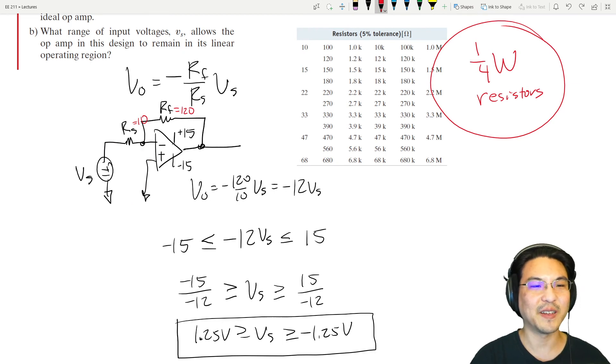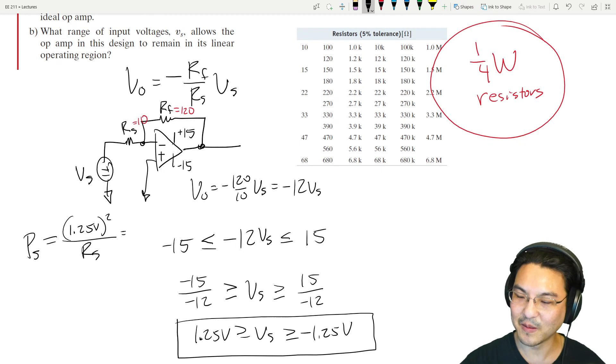The power here for this one would be 1.25V squared over R. If RS is 10, 1.25 squared over 10—let me punch that in the calculator—0.156. If we're running a quarter-watt resistor, that's 0.25, so that one is fine. That one will not burn.